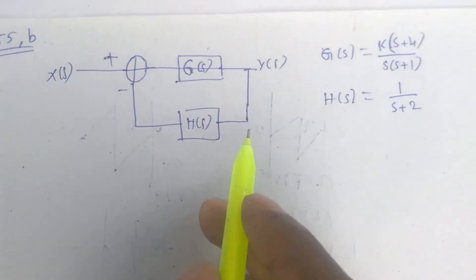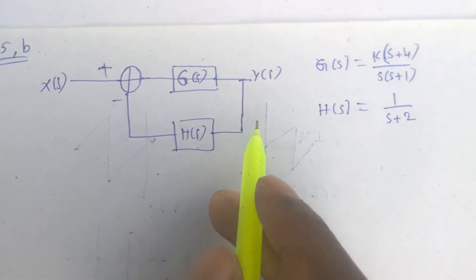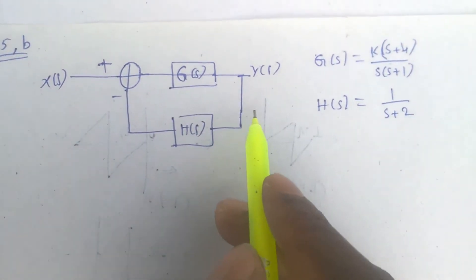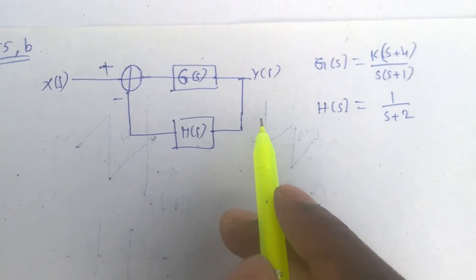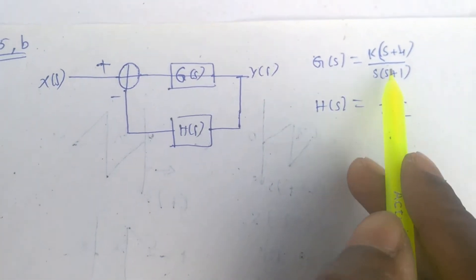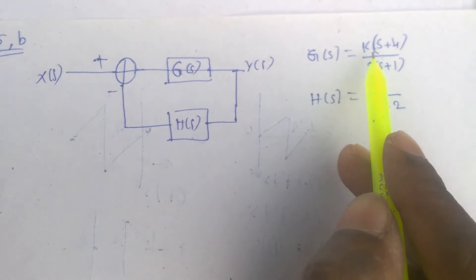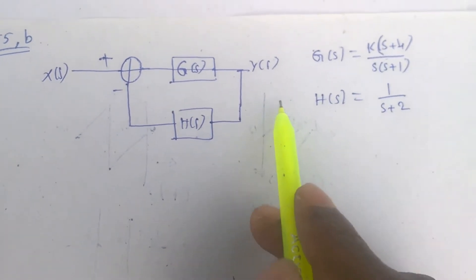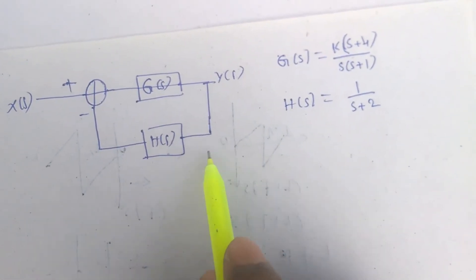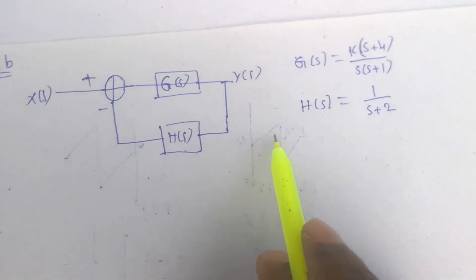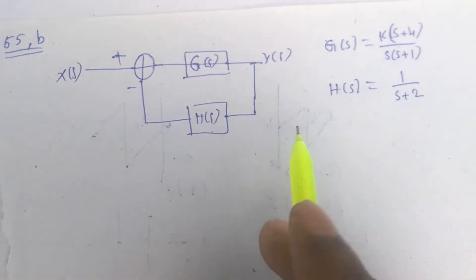In this question we are asked to find the value of k, or the gain, at which this closed loop system is said to be marginally stable.